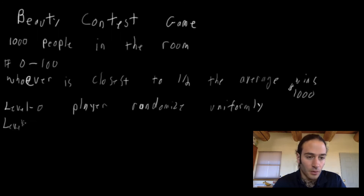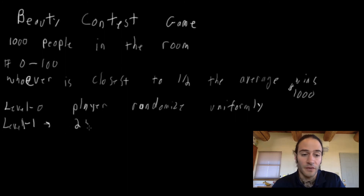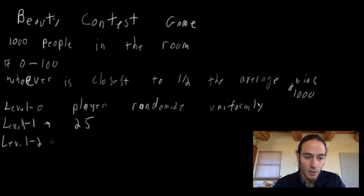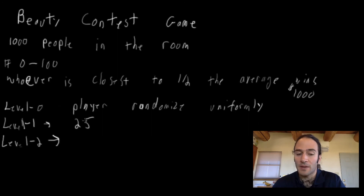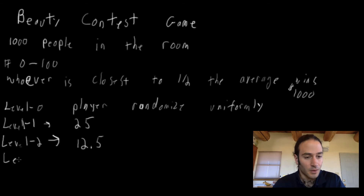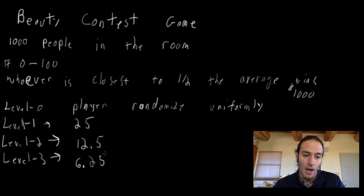What would a level one player do? If a level one player thinks that everybody else is randomizing uniformly between zero and 100, the average would be 50, so the level one player plays 25. What would a level two player do? A level two player assumes everybody else is a level one player and chooses its best action. So a level two player thinks everybody in the room would play 25, and therefore plays 12.5. A level three player would play 6.25. This goes on and on until the levels get higher and higher and this number gets closer and closer to zero.